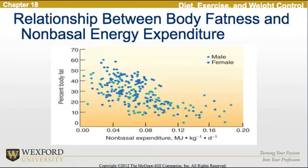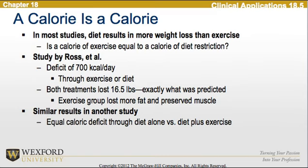In most studies, diets result in more weight loss than exercise alone. In a study by Ross et al., a deficit of 700 kilocalories per day through either exercise or diet showed that both treatments lost 16.5 pounds, exactly as predicted. However, the exercise group lost more fat and preserved more muscle. Similar results were seen in another study comparing equal caloric deficit through diet alone versus diet plus exercise.